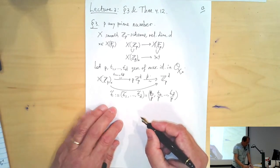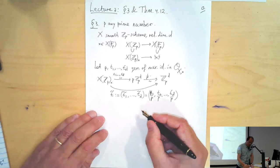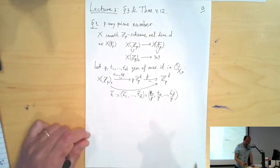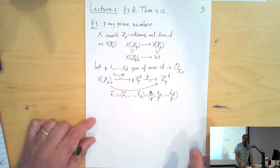This map is called t̃, given by all these parameters divided by p: (t_1/p, t_2/p, ..., t_d/p). These give the bijection from the residue polydisc to Z_p^d.